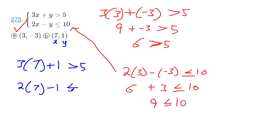Now if we plug in 7 for x and 1 for y over here, 2 times 7 makes 14, 14 minus 1 makes 13, and 13 is not less than 10. So it didn't work for both. It has to work for both. So 7, 1 is not a solution.